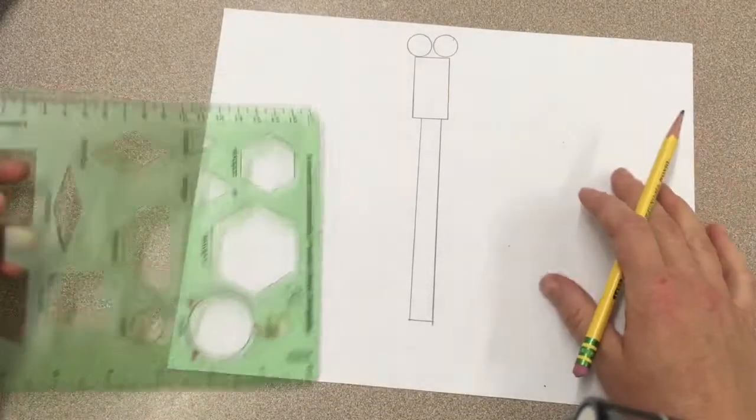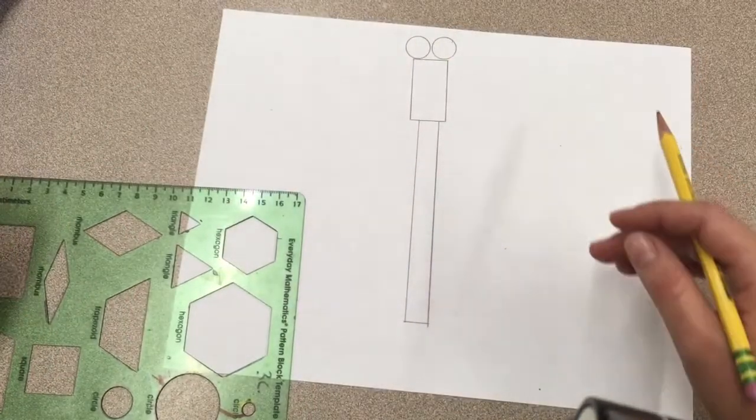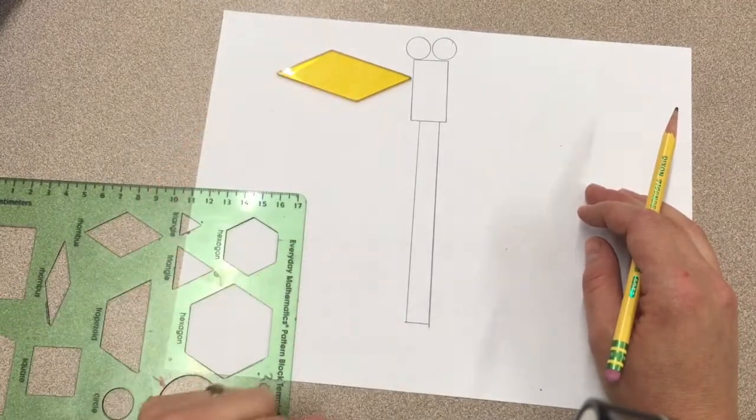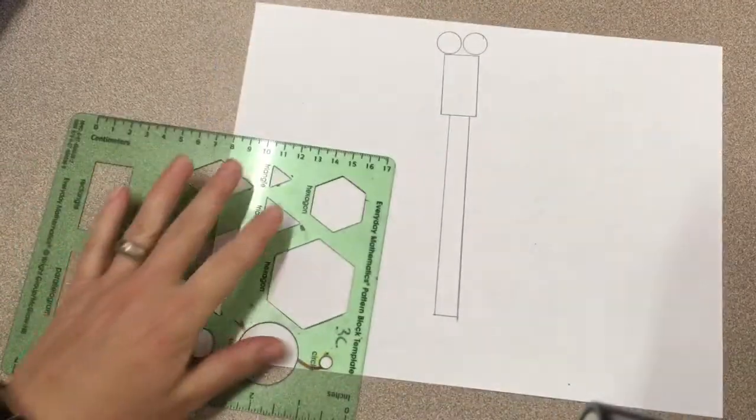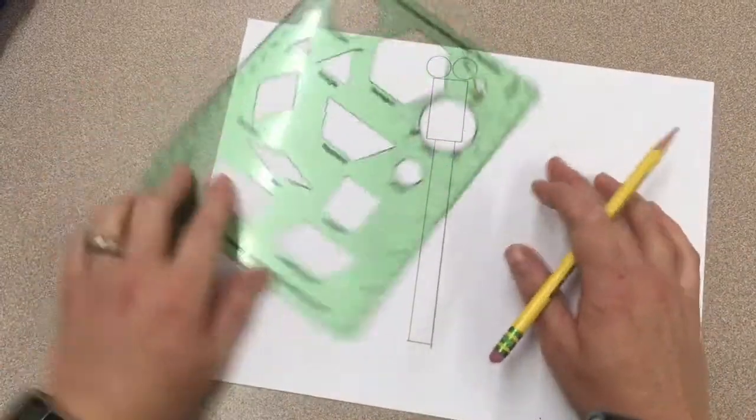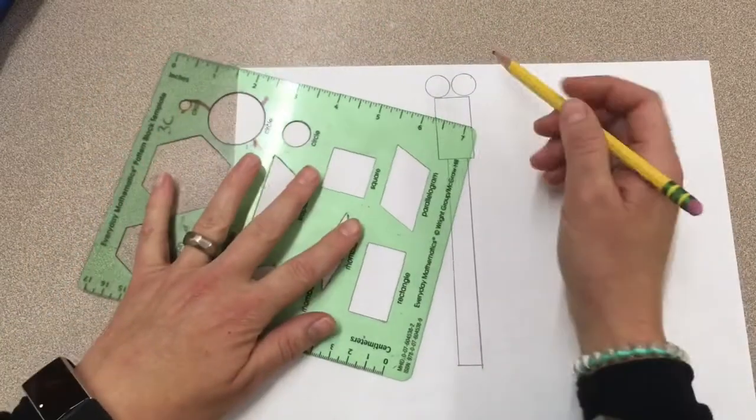So now I've got my body and I'm going to figure out how I'm going to do these wings. So I think for the wings I might do big parallelograms and since I don't really have the size parallelogram I want, I could look at, also called a rhombus, I could look at the rhombus and then make my own rhombus.